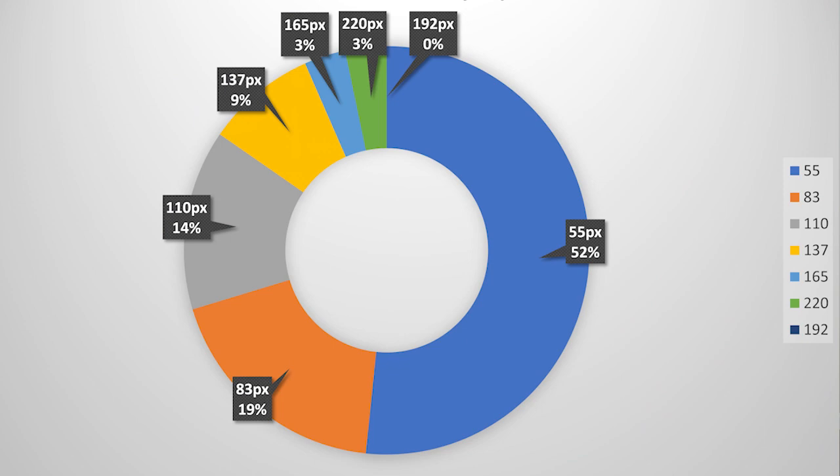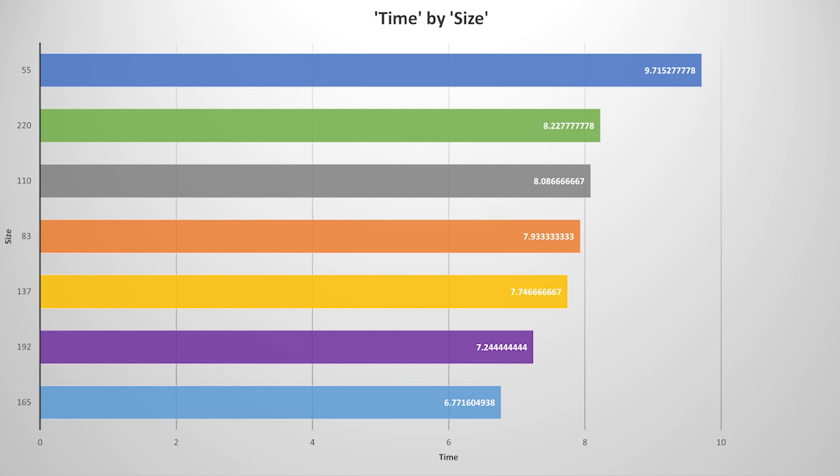The results were pretty much what I expected to see. The smallest buttons — about a half an inch in diameter, 55 pixels on that particular panel — resulted in over half of all misses, and it took an average of one and a half seconds longer to successfully press that button size than any other button size. So you can see a really small button is hard to hit accurately, and it definitely takes longer because you're missing it or can't quite get it activated.